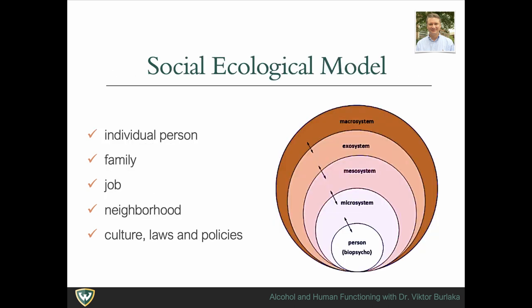The social ecological model, first described by Urie Bronfenbrenner, explains the impact of multiple levels of social systems on individual development and behavior. These systems include micro, meso, exo, and macro system elements. According to this model, an individual has personal biological and psychological makeup; however, the genetic component alone does not fully explain the risk of developing substance use disorder.